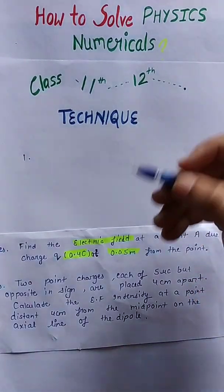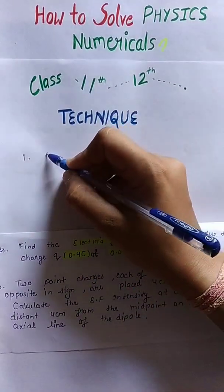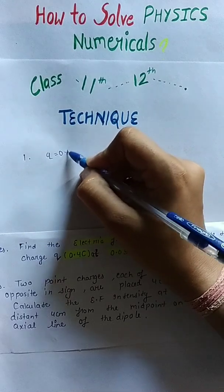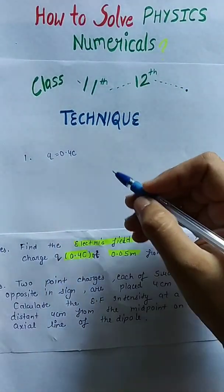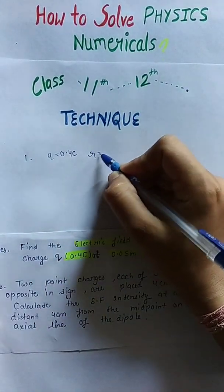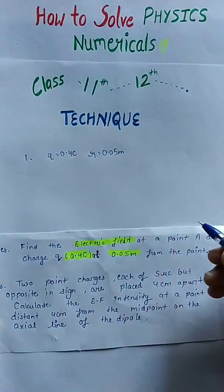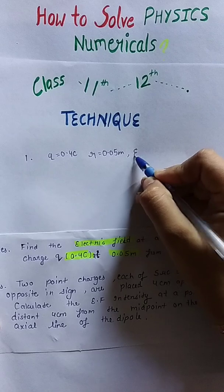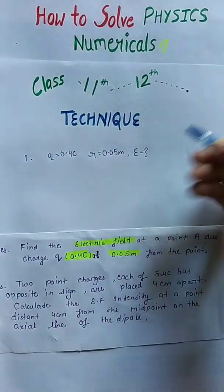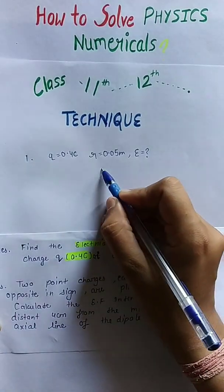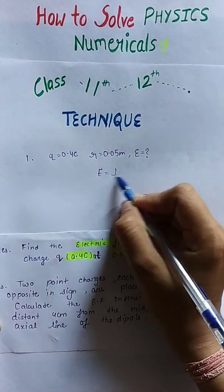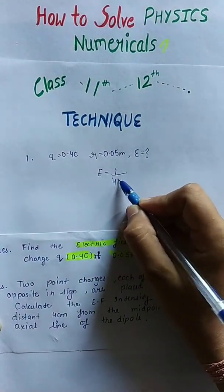The given values are: q is 0.4 coulomb, r is 0.05 meter. What we have to find out is the value of electric field E. Now the formula of electric field is 1 upon 4 pi epsilon naught, q upon r square.